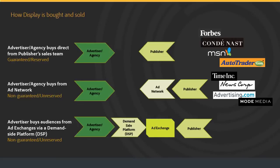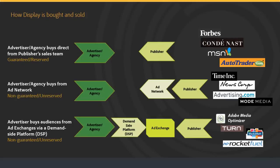The third common way display is bought and sold is an advertiser buys from the ad exchange using a demand-side platform. The inventory is non-guaranteed. The DSP is a technology that an advertiser uses to reach the ad exchange and bid on the inventory they want. Examples of DSPs include Adobe Media Optimizer, TURN, Media Math, and Rocket Fuel. Examples of ad exchanges include the Google Ad Exchange, Microsoft Ad Exchange, Rubicon, AppNexus, and others.